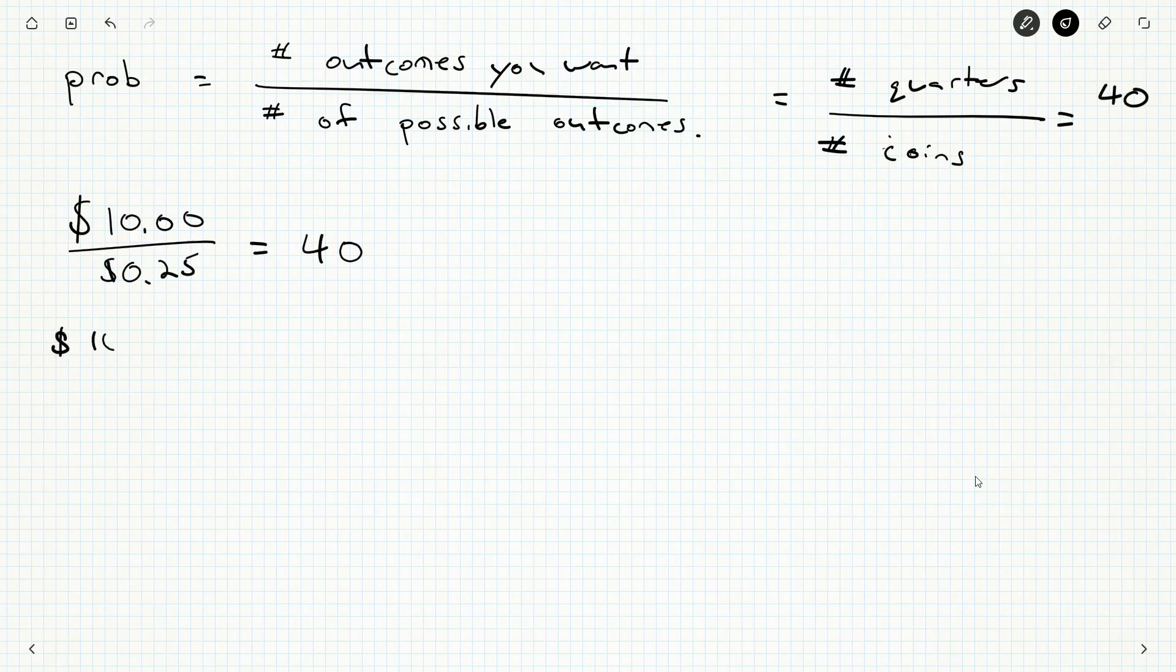Now, how many nickels are there? Well, there's 5 cents in a nickel, or 0.05 dollars makes a nickel. So 10 divided by 0.05. You don't really need the dollar signs. They sort of cancel out as though they were units. But we get 200 nickels.